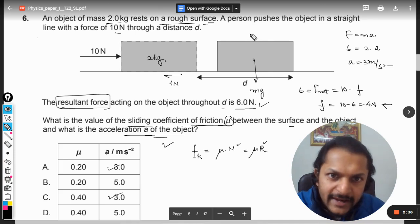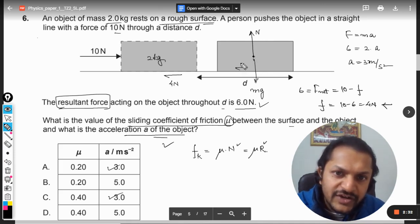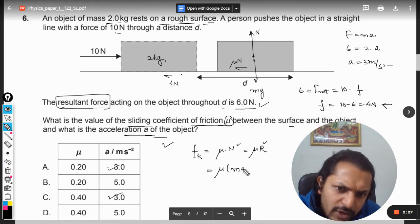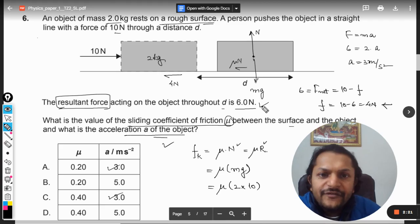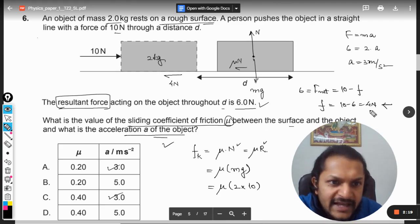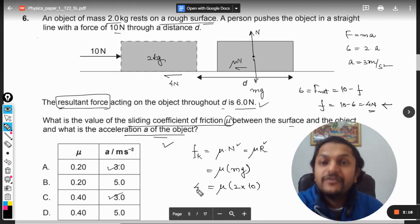The downward force is mg, and the upward force is the normal reaction. So this friction is equal to μ into N. So I can say it will be μmg. So μ I don't know, mass is 2, g will be taken as 10, and the friction has to be taken as 4 Newton as we have calculated, and all the units are in SI.